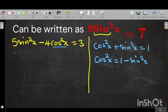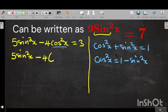Alright, so we have 5 sin squared x minus 4. Then here we are going to replace 1 minus sin squared x. So 1 minus sin squared x is equal to 3.